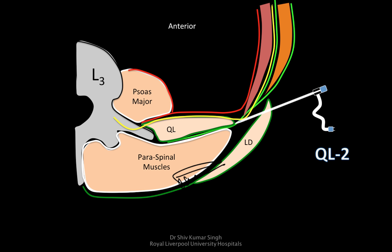Then there is the Quadratus lumborum 2 block, where they went anterior to the aponeurosis and posterior to the Quadratus lumborum. This is a more superficial block and should be easier, but you could actually have a kidney lying just anteriorly — so the chances of damage to the kidney are higher if you're doing QL block 1. With QL block 2 it's more superficial, and it is supposed to give the same kind of analgesia as QL block 1 but with an easier approach.